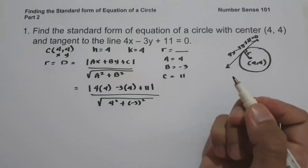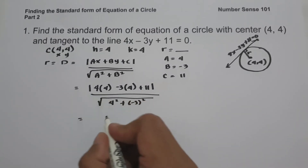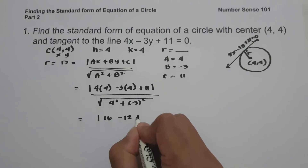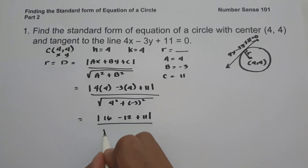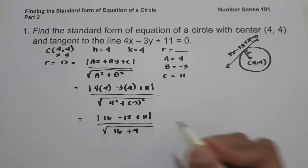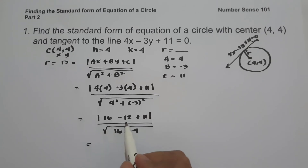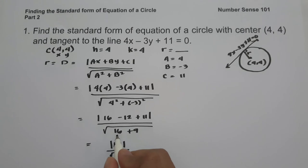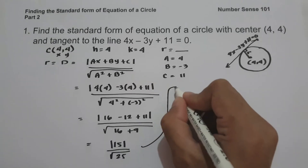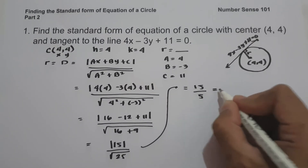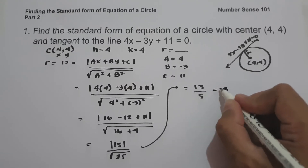Let us simplify. 4 times 4 is 16, negative 3 times 4 is negative 12, plus 11, all over square root of 4 squared which is 16, and negative 3 squared which is 9. So we have 16 minus 12 equals 4, and 4 plus 11 equals 15, over the square root of 16 plus 9 which is 25. The absolute value of 15 is 15, and the square root of 25 is 5, so our radius is 15 divided by 5, which is 3.